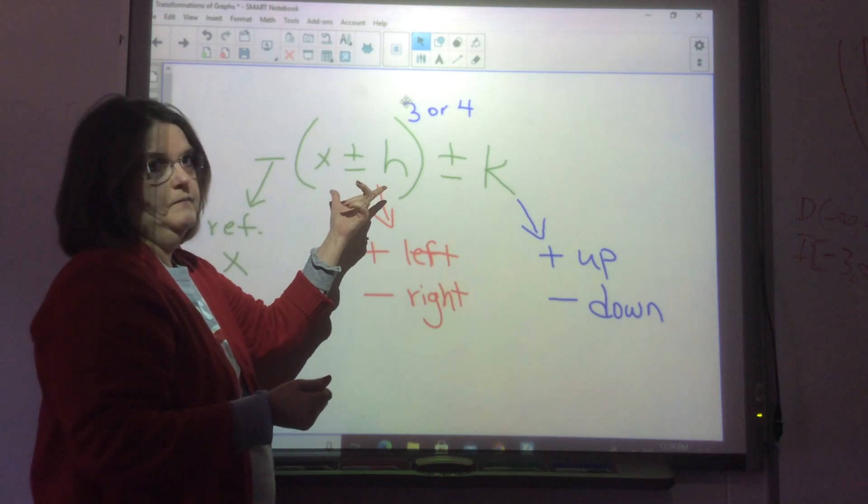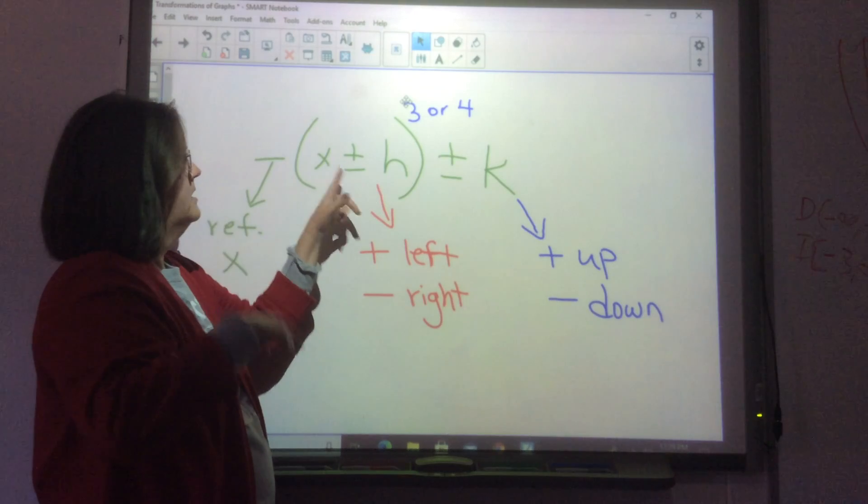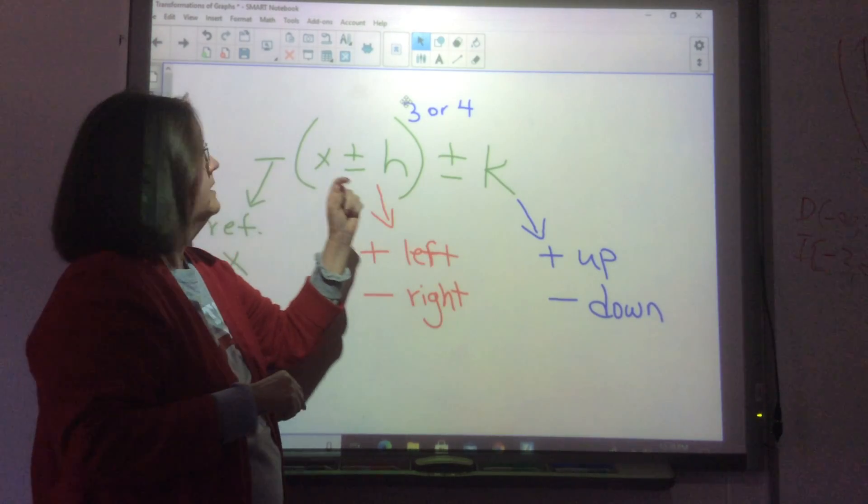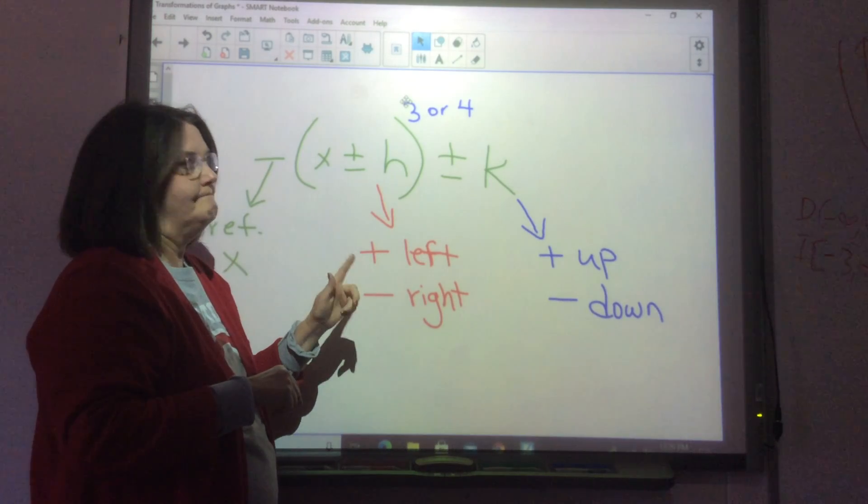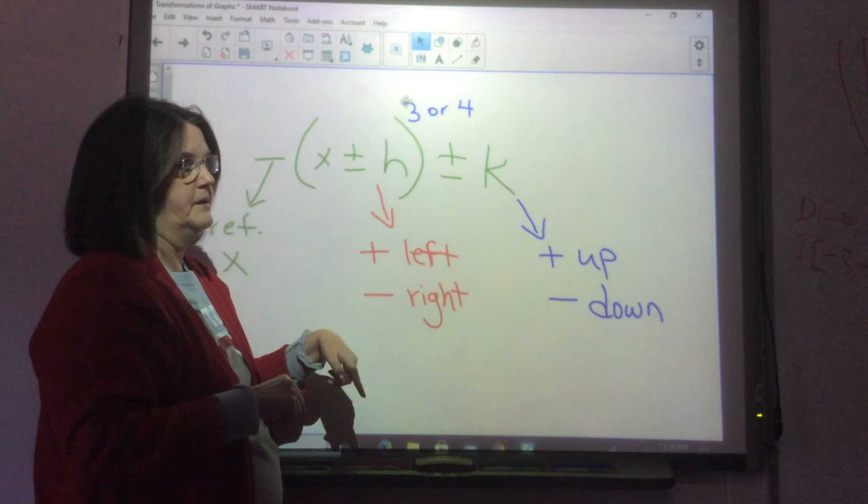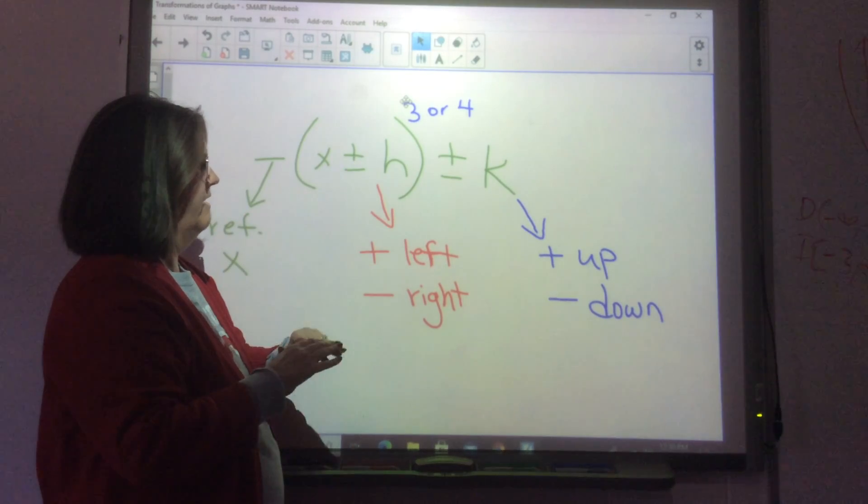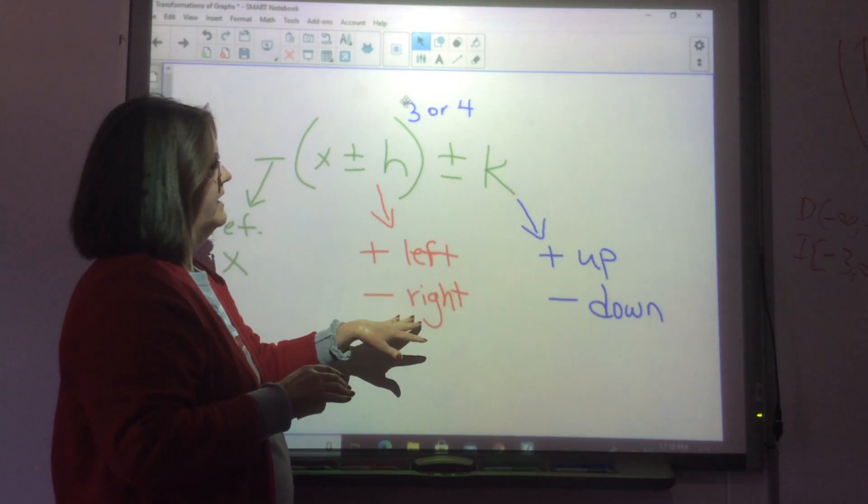Horizontal shifts, all of them, do opposite of what our brain tells us. When we see a plus, our brain thinks it ought to go right and our brain thinks a minus ought to go down. When, in fact, exactly the opposite happens. When we see a plus, instead of the graph going to the right, it'll go left. And when we see a minus, instead of it going down,